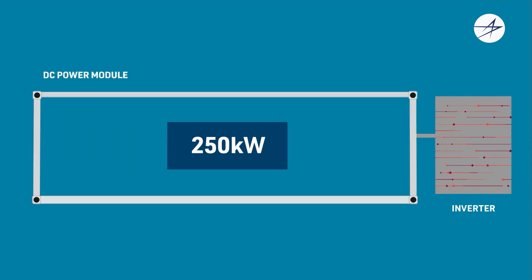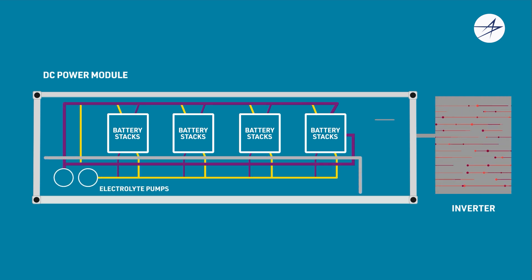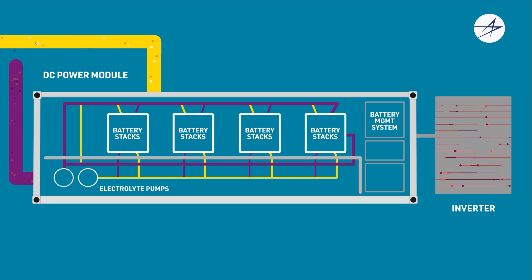Each DC power module provides 250 kilowatts of power and has three important subsystems: first, electrochemical battery stacks; second, electrolyte pumps; and third, battery management system. As a whole, the power module converts electricity into chemical energy.